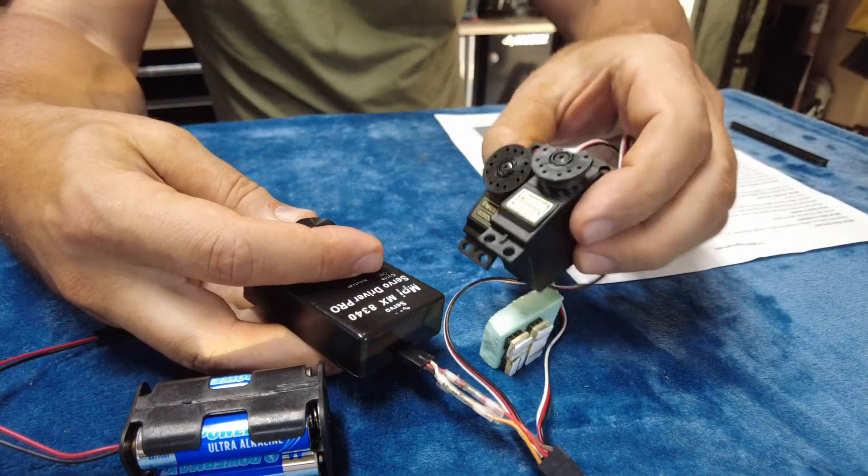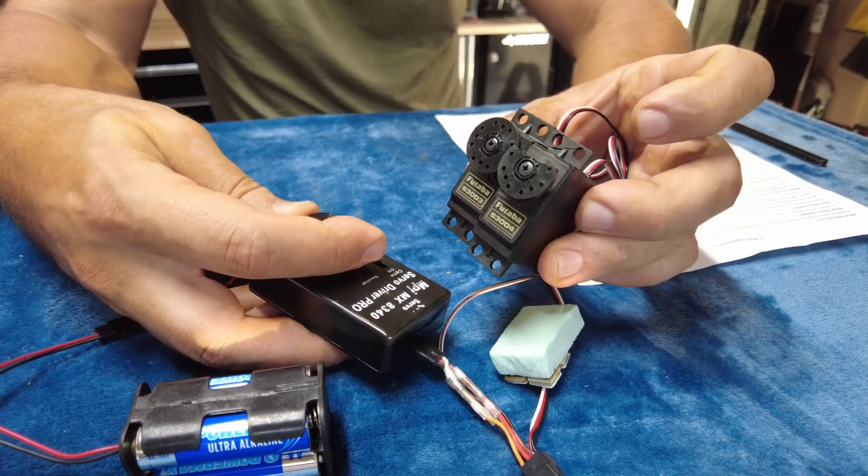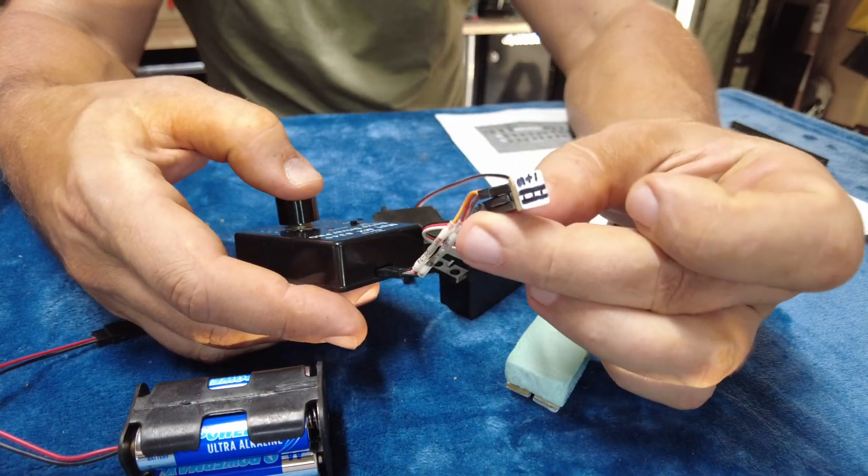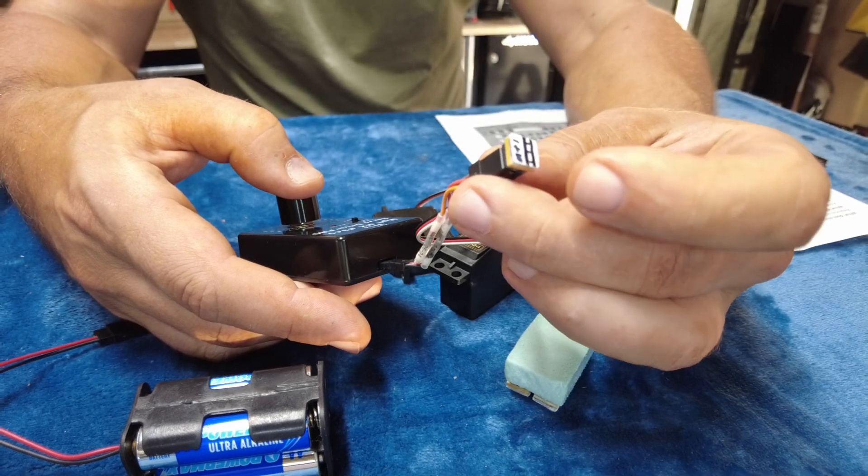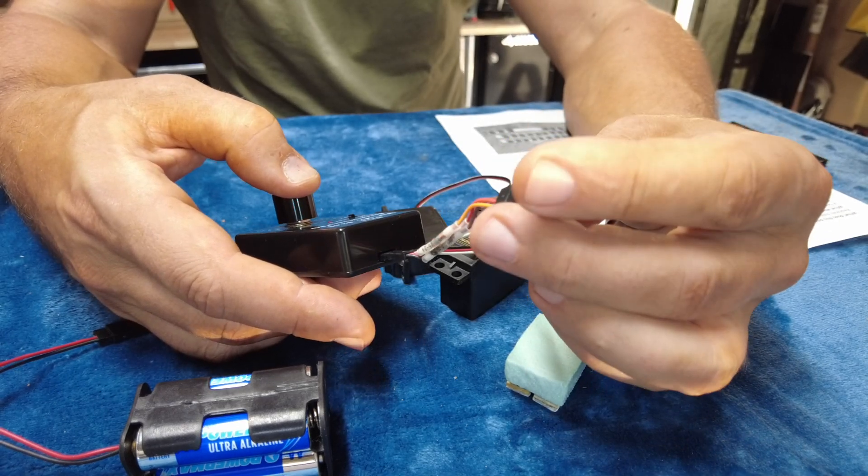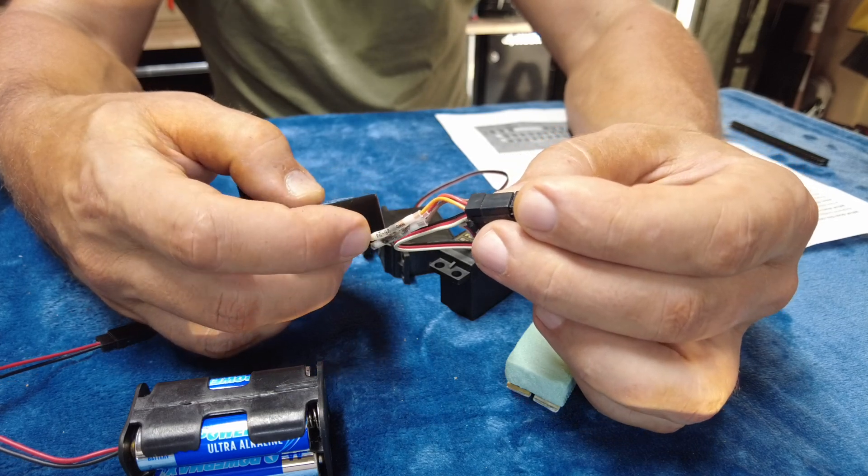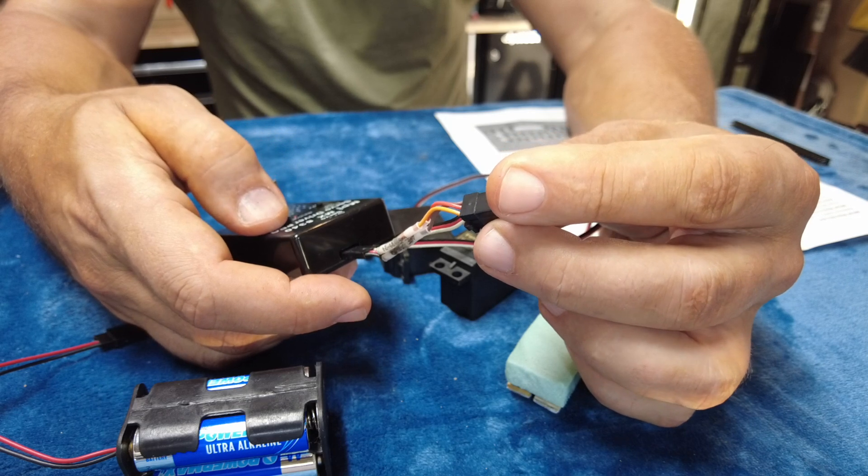And now you can see it does the same thing as that Y splitter, but it's a nice tidy package that doesn't take up any room in your cylinder, just that little unit and then a little short male by male adapter to go from the receiver into the splitter unit itself.